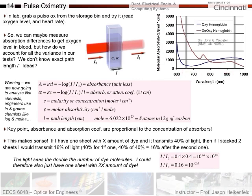The key point is that absorbance and absorption coefficients are proportional to the concentration of the absorbers. So if you have more deoxygenated blood, you should see a change in the total absorption signal. The absorption is proportional to the concentration — that's a key point. We want to calculate concentrations to figure out how much of the blood is oxygenated versus deoxygenated.